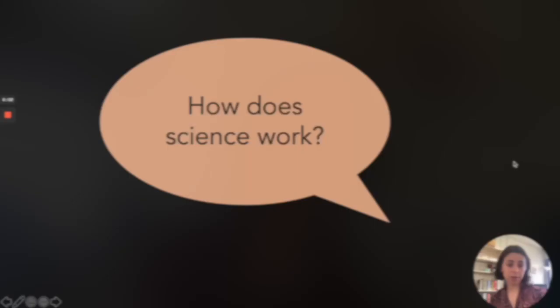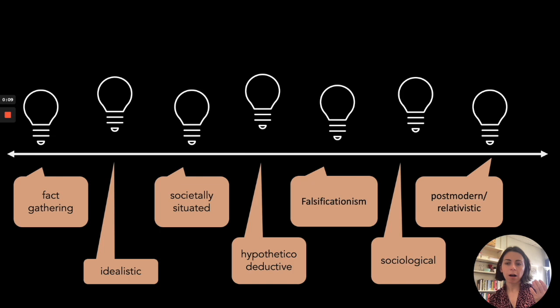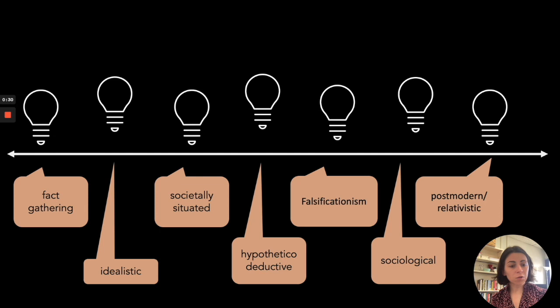Our question is: how does science work? We're going to look at a bunch of different theories, starting with a very simple theory of just fact-gathering. We'll then turn to idealism, socially situated science, the hypothetical deductive method proposed by the logical positivists, Popper's falsificationism, Kuhn's sociologically situated science, and then a postmodern or relativistic conception of how science works.